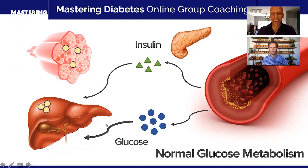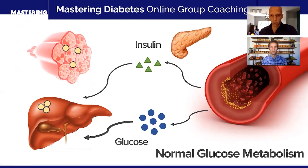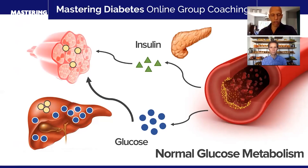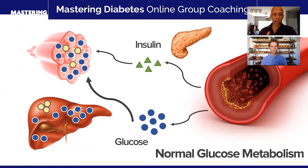In order for glucose to get inside of tissues, it has to be escorted by insulin. Insulin is also floating in your blood and is manufactured by your pancreas. Under normal circumstances, insulin directs glucose into your tissues. One tissue that glucose can get inside of is your liver. Another tissue that glucose can get inside of in large quantities is your muscle. When this happens, insulin is able to direct both your liver and muscle into storing glucose or using glucose to burn for energy right here and right now.